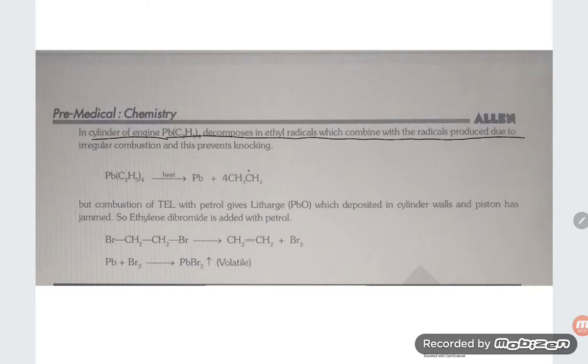So how is it preventing the knocking? By combining with the free radicals. Like Pb(C2H5)4 with heat gives Pb plus four times CH3CH2 free radical.